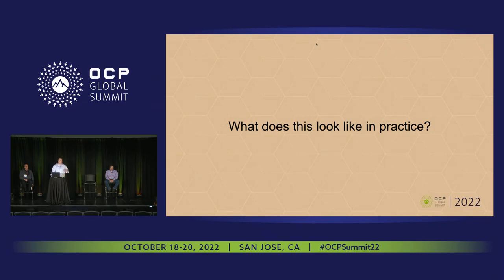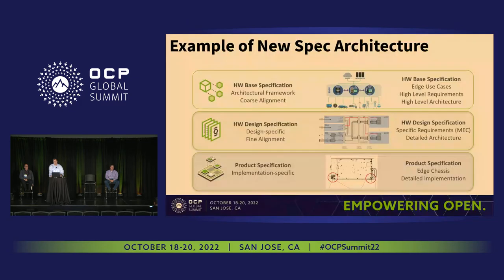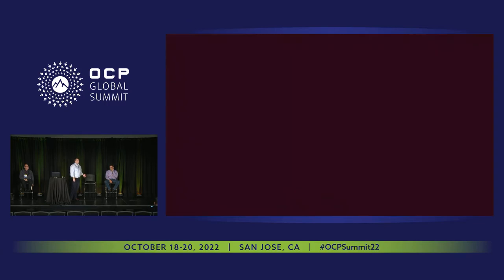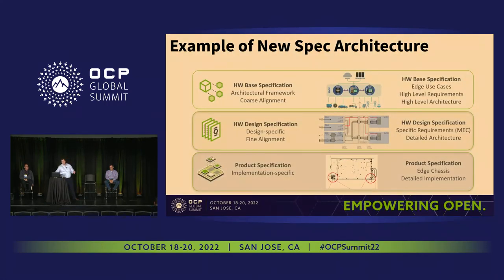So what does this look like in practice? Just some examples — this is going off an edge chassis product. First we have the base spec framework: course alignment, very IP-light, no one has too much skin in the game, you're shaping overall requirements. The design spec is design-specific, going off customer requirements — there can be multiple of these that all align to the base spec, but they're finally aligned to an eventual goal, which is the product specification: implementation-specific, designed towards a product.